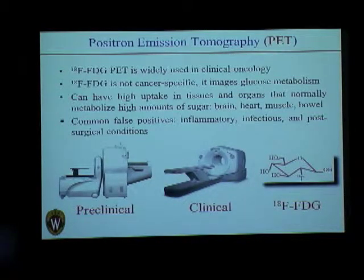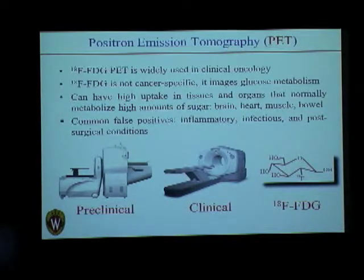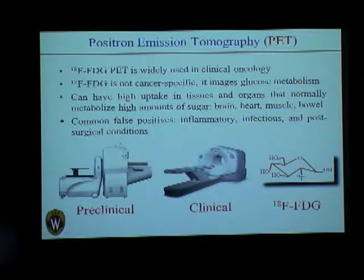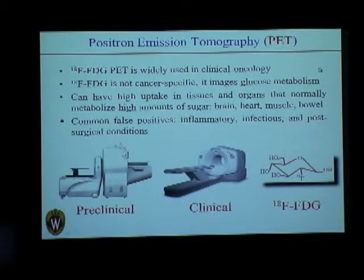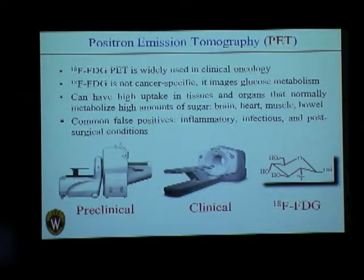The problem with FDG is that it is based on incorporation in glucose-metabolizing regions and is not cancer-specific. Cancer has been shown to be a highly metabolically active tissue for glucose, but FDG can also show high uptake in normal organs that metabolize glucose at a high rate — such as brain, heart, and muscle — and in inflammatory or infectious conditions or after surgery, which may result in false positives. Therefore, we need an imaging tracer that is very specific to tumor.